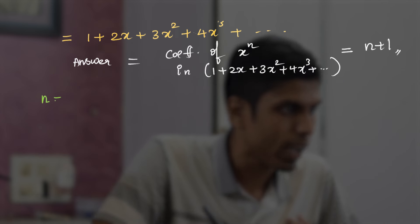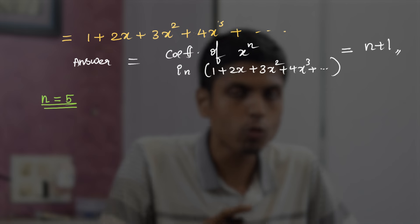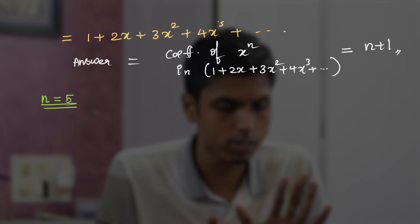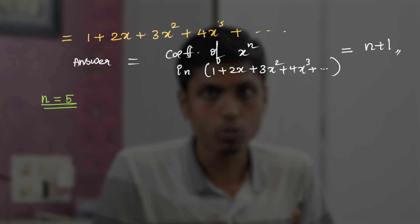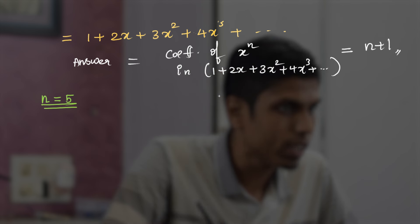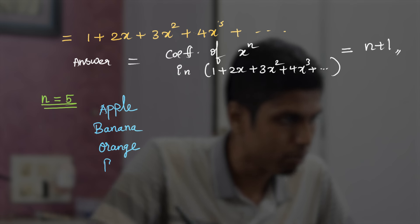Let's check this out for a particular value. Let's take n equals 5. That is, I have to make a fruit salad with 5 fruits under those 4 constraints. What were they? Apple must be even, number of bananas must be a multiple of 5, oranges should be less than or equal to 4, and pears must be less than or equal to 1.